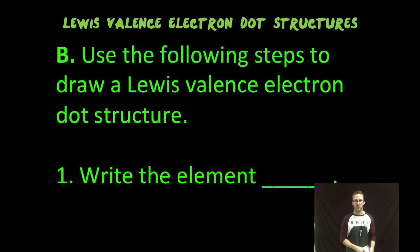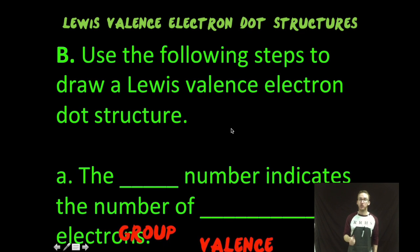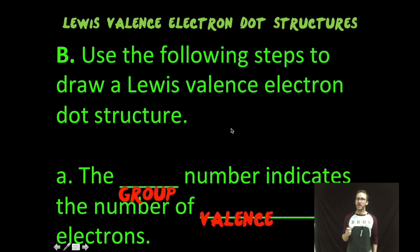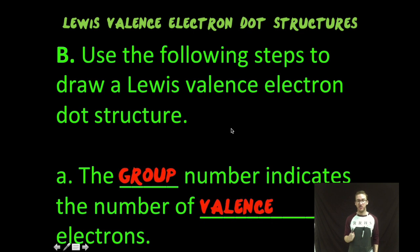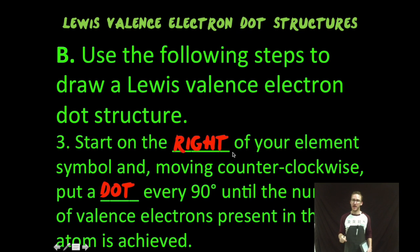Quick steps for drawing Lewis valence electron dot structures. First, write the element symbol. Use your periodic table. Two, determine the group number for that element. Recall that the group number is going to tell you the number of valence electrons that that element has. And then final step, start to the right of your element symbol and move counterclockwise. Put a dot every 90 degrees until the number of valence electrons present in the atom is achieved.